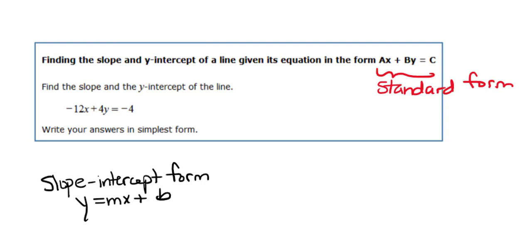So in this particular example, find the slope and the y-intercept of the line negative 12x plus 4y equals negative 4. That's in standard form because the x term and the y term are on one side and the constant term is on the other.